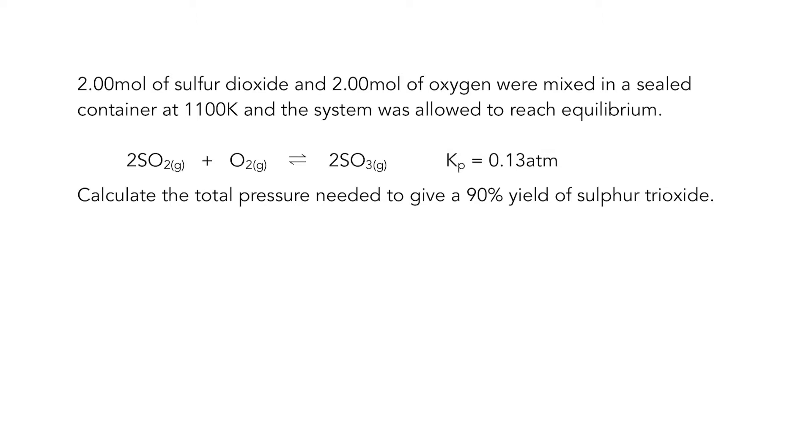We've got two moles of sulphur dioxide, two moles of oxygen sealed in a container. We've got a stoichiometric equation and a value for KP. Calculate the total pressure needed to give a 90% yield of sulphur trioxide.